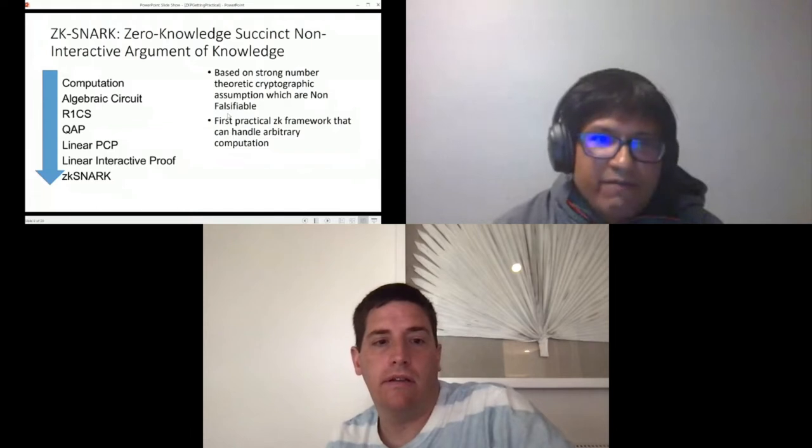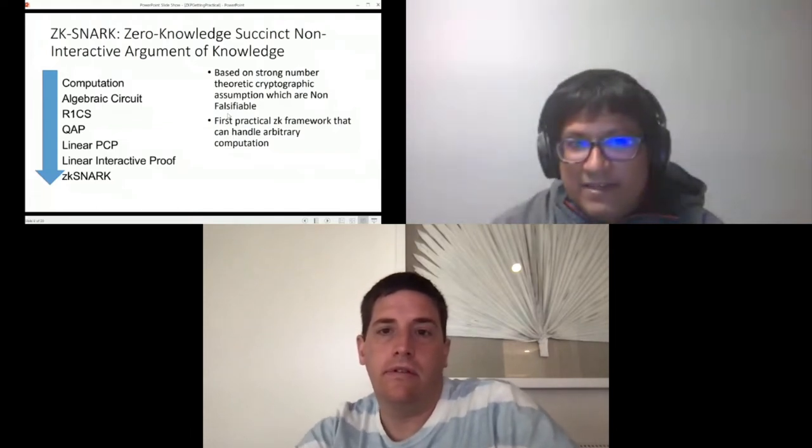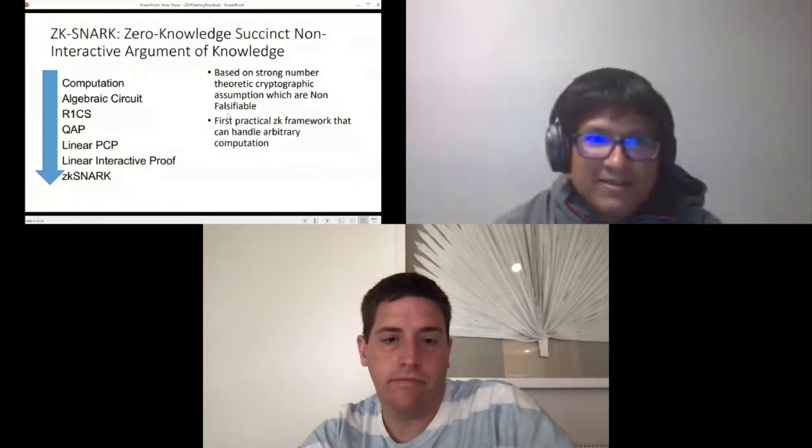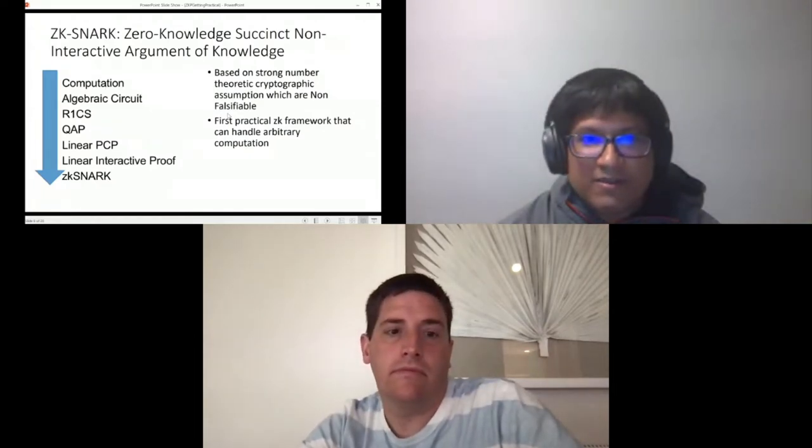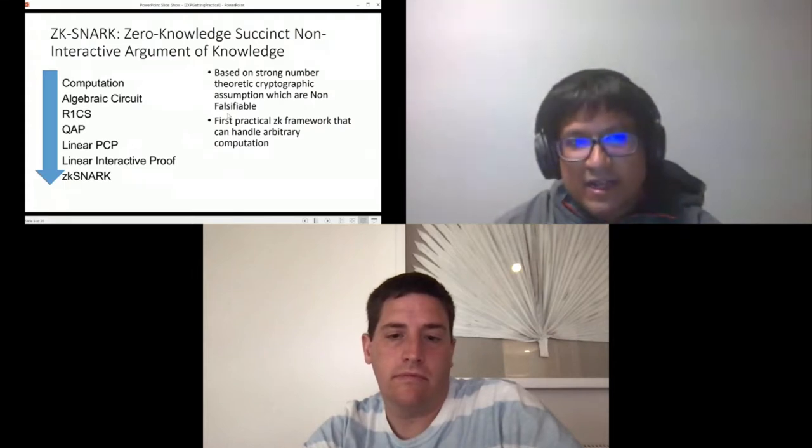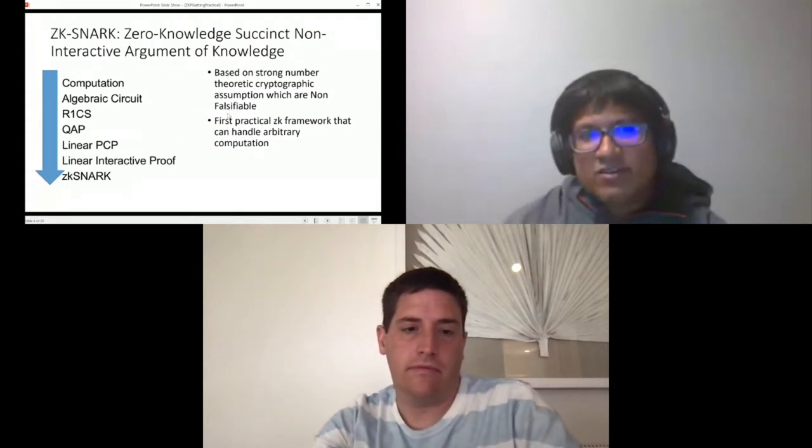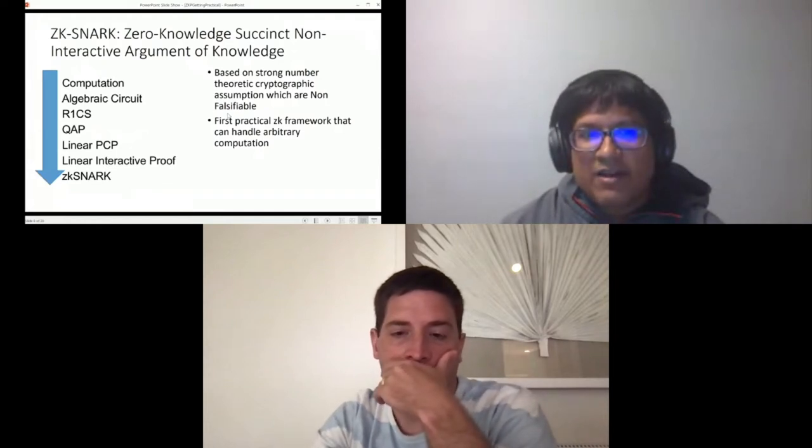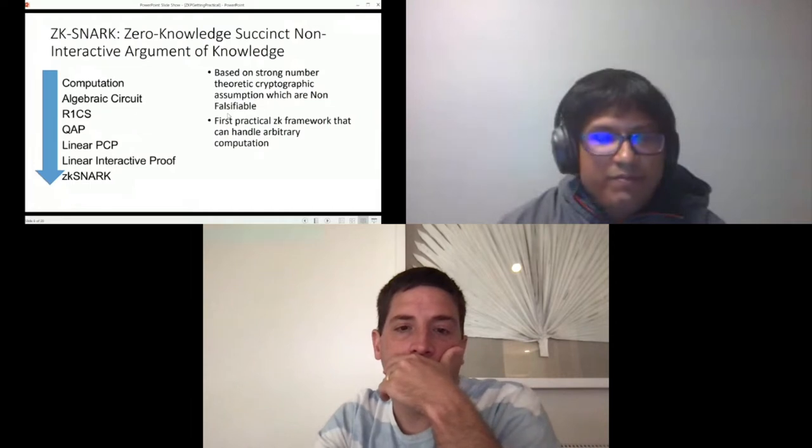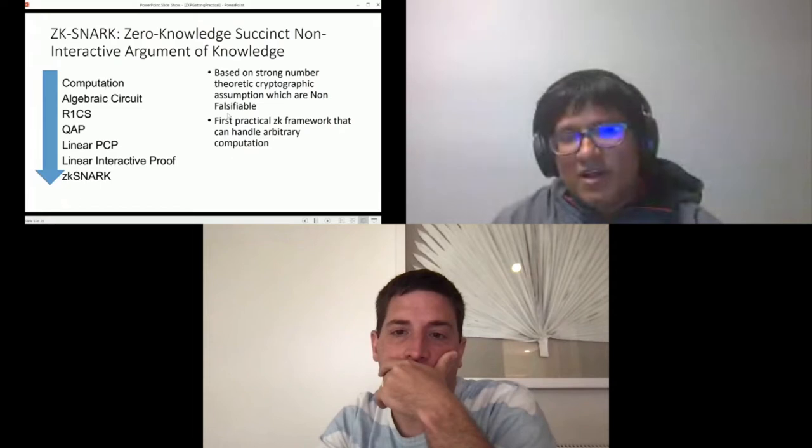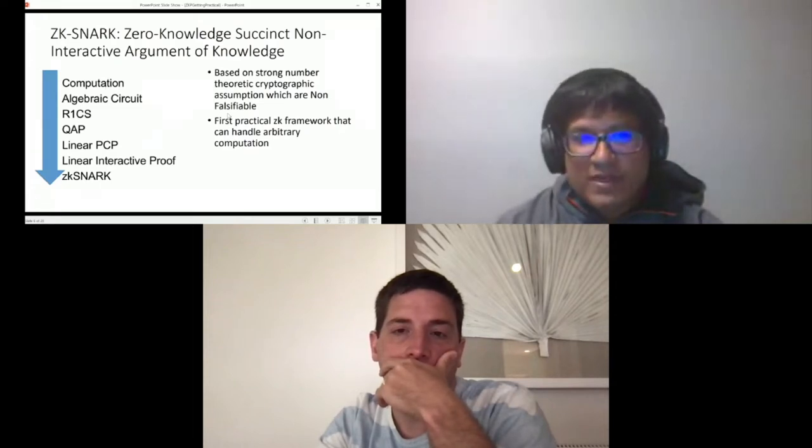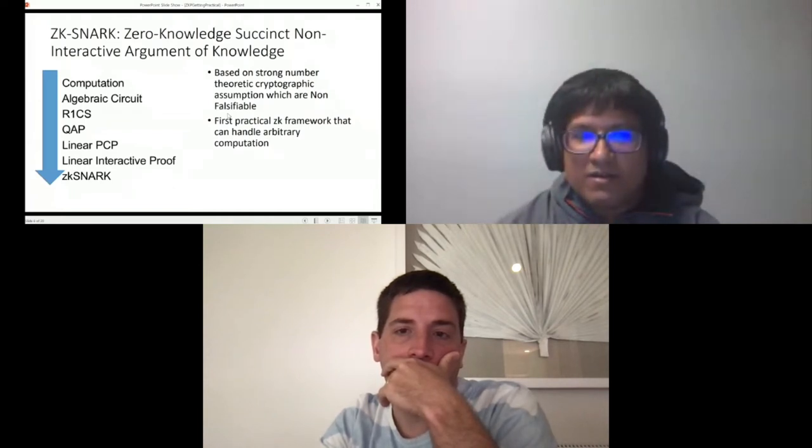This is actually the first practical zero-knowledge framework that can handle pretty much any arbitrary computation. However, as you can see on the flow chart, developing a zk-SNARK framework is not easy. It goes through many steps. First step you have the computation circuit, the actual computation you want to perform, and from that you need to create an algebraic circuit and that gets converted to R1CS which is rank one constraint system. After that it gets converted to QAP which are quadratic arithmetic programs, and then you have linear PCPs or probabilistic checkable proofs, and that becomes linear interactive proofs and then finally you can have the non-interactive zk-SNARK.